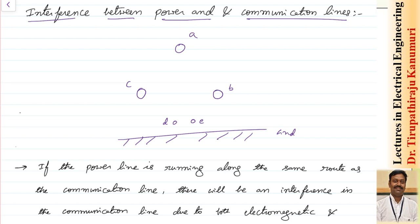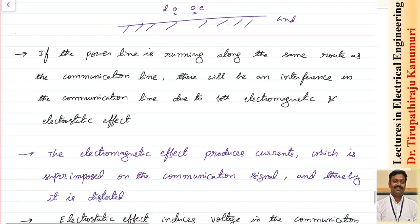The electric field produced by each of the transmission line conductors will link with the communication conductors as well. This leads to the electrostatic effect, also called the capacitance effect. The magnetic flux produced by the current passing through these conductors links with conductors D and E, leading to the electromagnetic effect, or inductance effect. Both these effects create problems in the communication line.